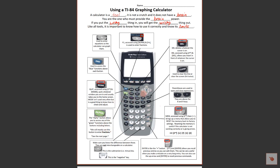The alpha button accesses the green functions — alpha is used because many second functions are letters. Most of the time we'll use it to access the fraction menu via alpha + Y equals. Make sure you know the difference between the subtraction button — the operation of subtracting — and the negative button, which makes something the opposite of what it was. The enter button is your equals key; second + enter gives you entry for deep recall of previous commands.